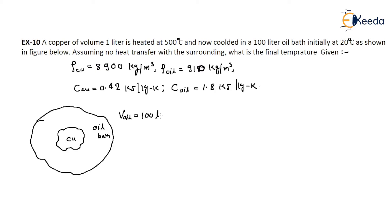The volume of oil is 100 liters and the temperature of the oil is 20 degrees centigrade. The temperature of the copper is 500 degrees centigrade. Assume no heat transfer with the surroundings — this is fully insulated.